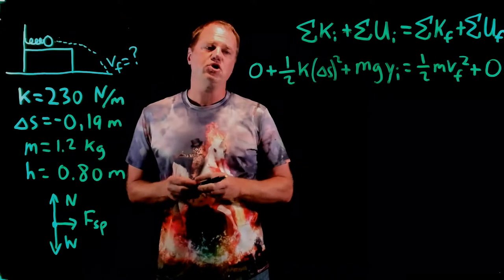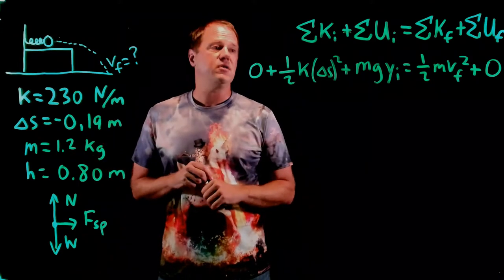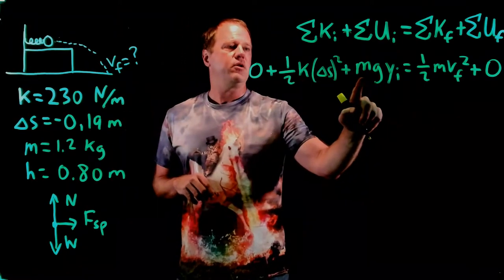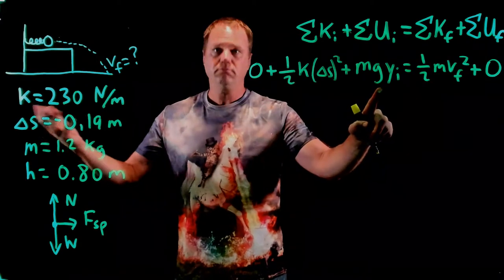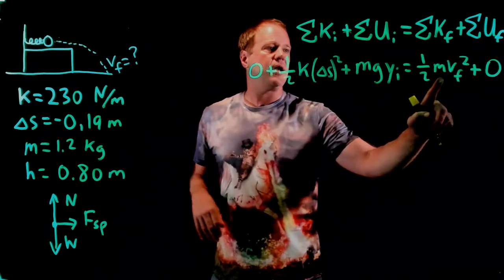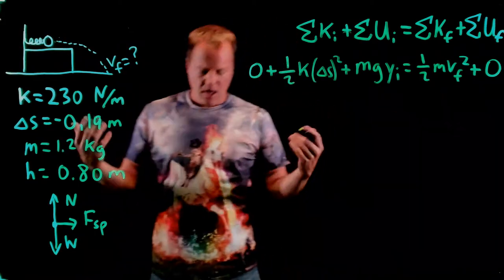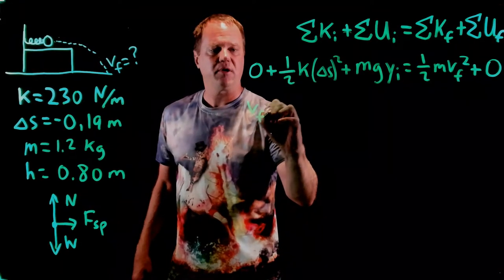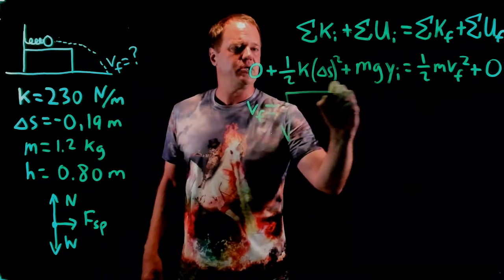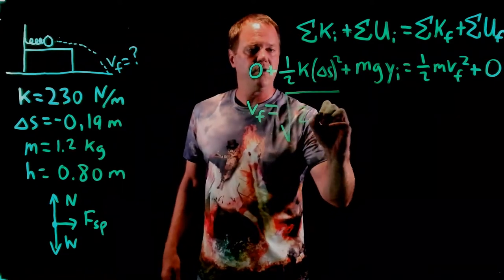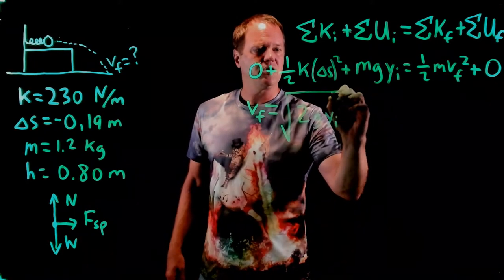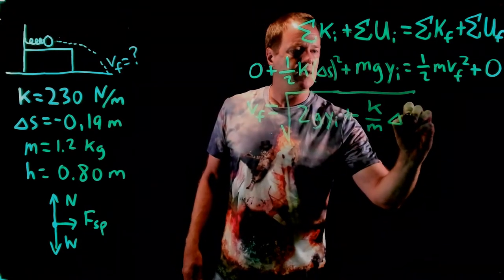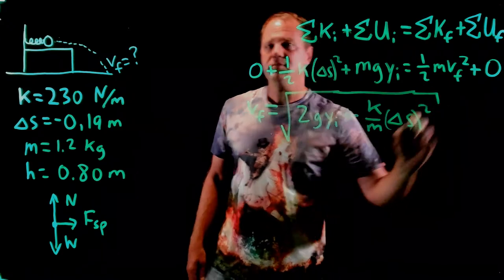But as usual, before doing the algebra, I want to make sure that I know everything in this equation other than the one unknown, and I do. I know the spring constant. I know the compression. I know the mass of the object. I know which planet this is on, presumably earth. I know the initial height. I know the mass, and so this is the one unknown, and you can grind out the algebra. I'll skip a few steps. This is physics class, not algebra class, so the algebraic solution to this would be square root of 2gy initial plus k over m times the displacement squared. Symbolic solution.